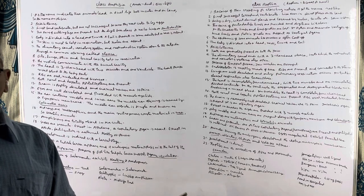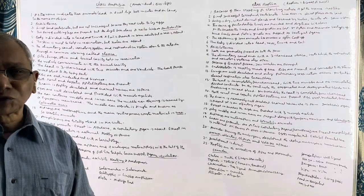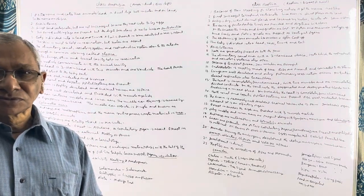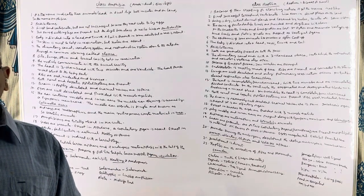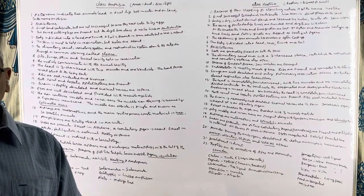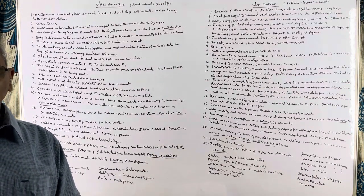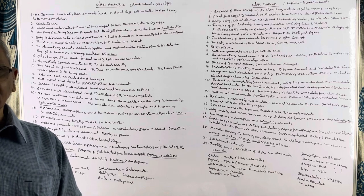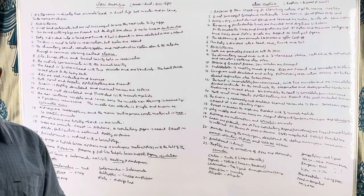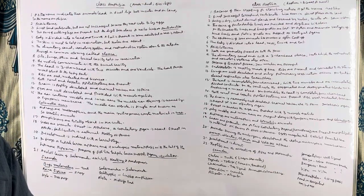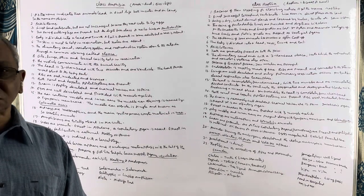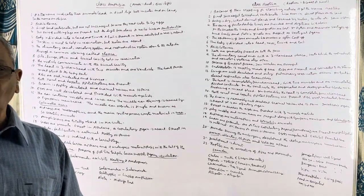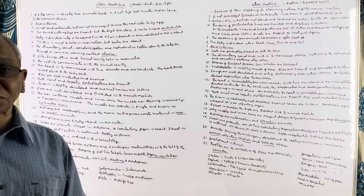The tadpole larva resembles a fish in every aspect. The appearance of a fish-like tadpole larva in the life history of the frog supports that fishes are the probable ancestors of amphibians. The tadpole larva undergoes metamorphosis, and for this metamorphosis the hormone thyroxine is required.